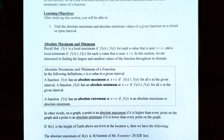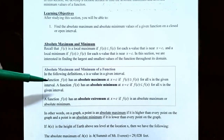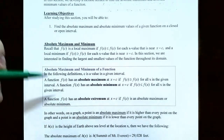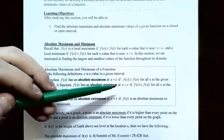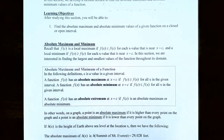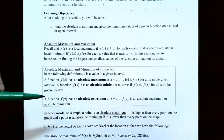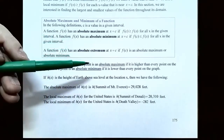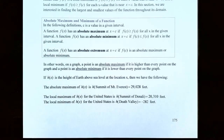A function f(x) has an absolute maximum at x equals c if f(c) is greater than or equal to f(x) for all x values in a given interval. A function f(x) has an absolute minimum at x equals c if f(c) is less than or equal to f(x) for all x values in a given interval. A function that has an absolute maximum or absolute minimum has an absolute extremum at x equals c. Think of it graphically: the absolute maximum is the highest point on the graph, and the absolute minimum is the lowest point on the entire graph.